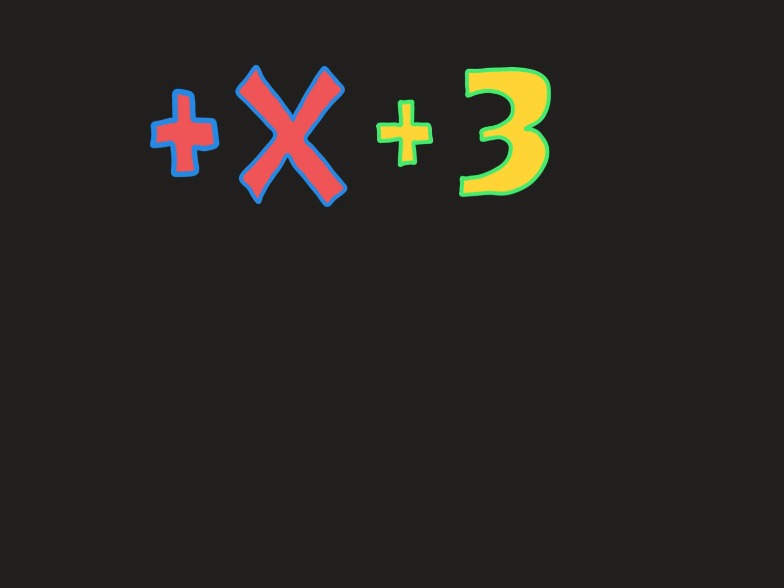But what happens when we add to this expression? Let's say another variable comes in, and it's x again. Well, I think you know where I'm going with this. We can combine like terms. We can put the x with the x, and that makes 2x.